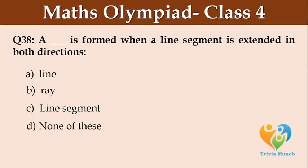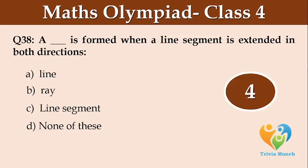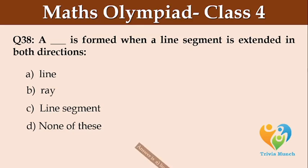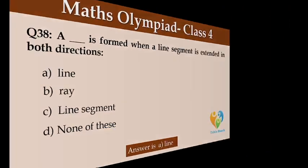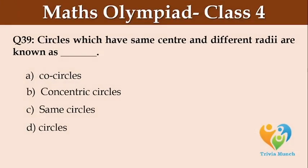A blank is formed when a line segment is extended in both directions. Circles which have the same centre and different radii are known as blank.